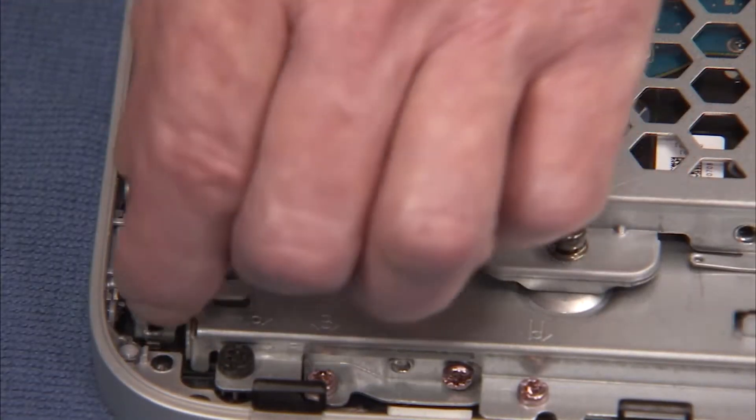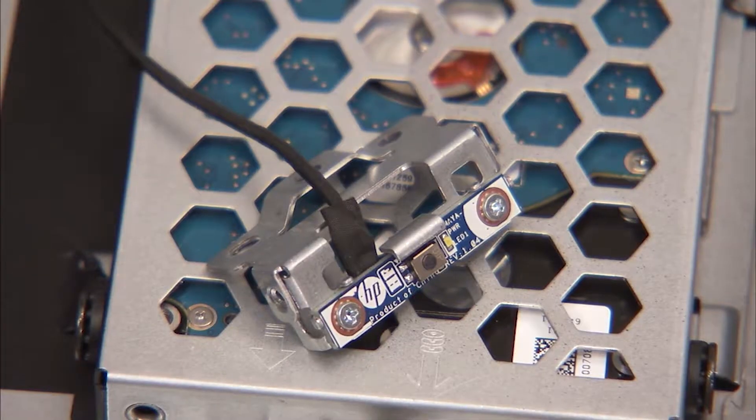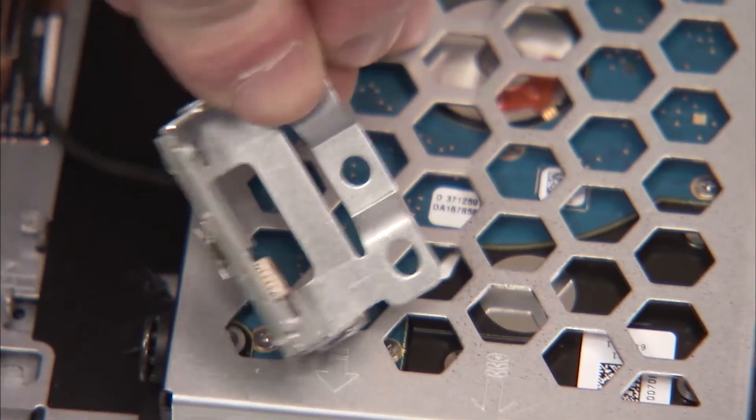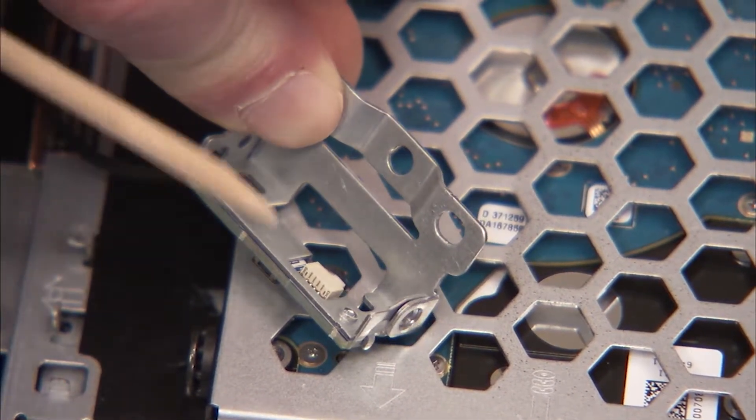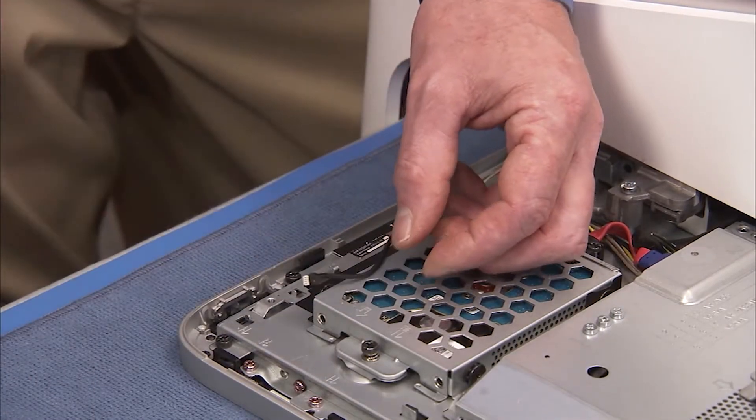Partially pull out the power button board assembly. Detach the connector from the power button board to fully remove the assembly from the unit.